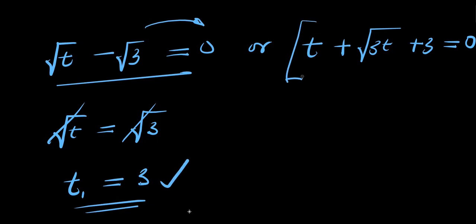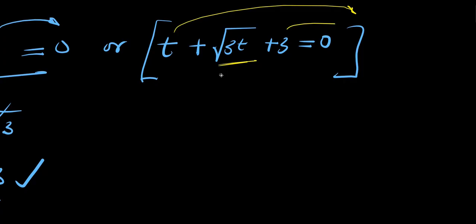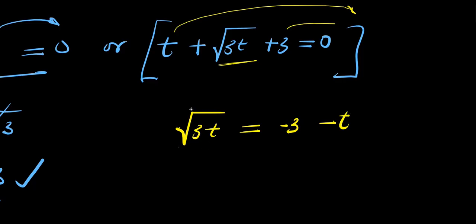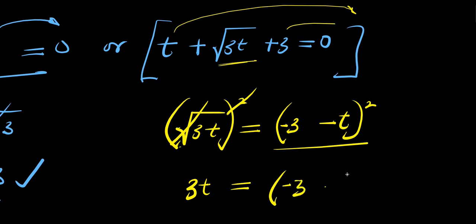To find the other values of t, we solve t plus square root of 3t plus 3 equals 0. We move the 3 and t over, leaving square root of 3t equals negative 3 minus t. In order to eliminate this square root, we square both sides of the equation: 3t equals (negative 3 minus t) squared, which expands to negative 3 times negative 3, plus negative 3 times negative t, giving 9 plus 3t plus 3t plus t squared.